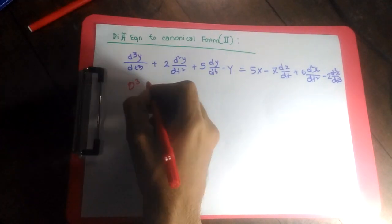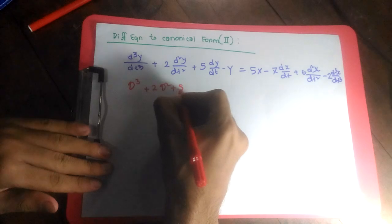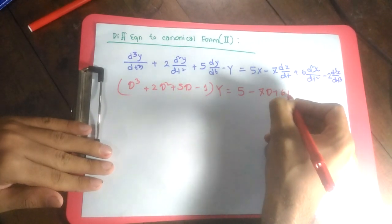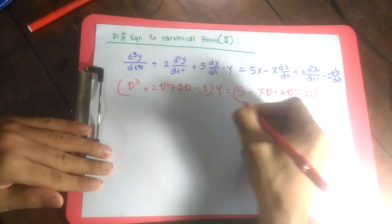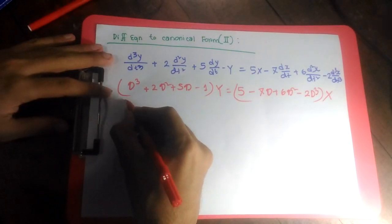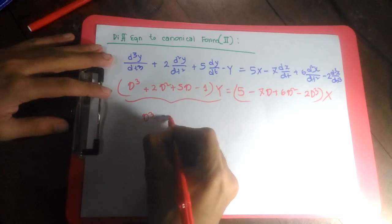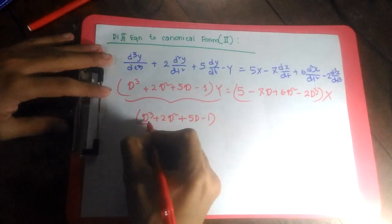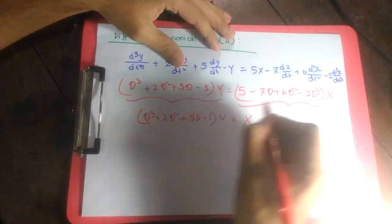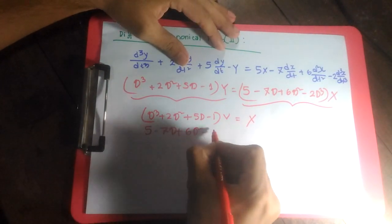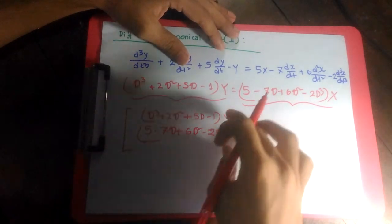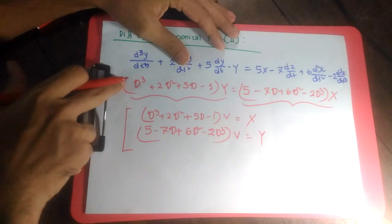The first step is to write the differential equation in operator mode, so you write the triple derivative as d cubed, second derivative as d squared, plus derivative as d, then minus 1. So y equals 5 minus 7d plus 6d squared minus 2d cubed applied to x. Now I'm going to claim that the operator d cubed plus 2d squared plus 5d minus 1 applied to some dummy variable v equals x, and the operator 5 minus 7d plus 6d squared minus 2d cubed applied to v equals y.